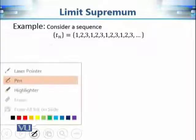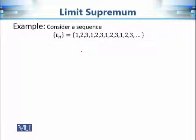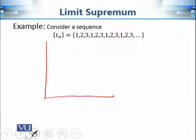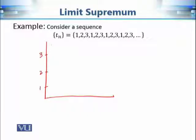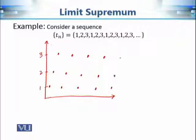Now let's consider the sequence 1, 2, 3, 1, 2, 3, 1, 2, 3, and so on. We can see that this sequence is definitely divergent because it oscillates between the three numbers 1, 2, and 3. If we plot the terms, they repeatedly cycle through 1, 2, 3.